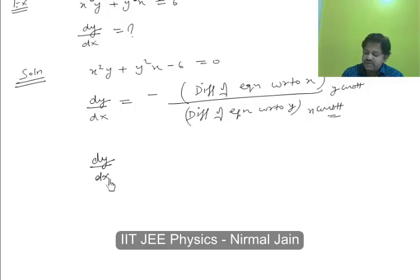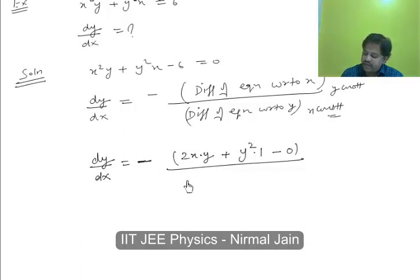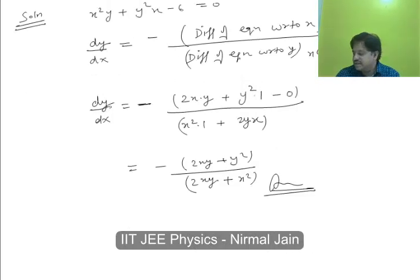Differentiation of x squared y with respect to x: 2xy — y is constant. Plus y squared x differentiated to 1, minus differentiation of 6 is 0. Now differentiation with respect to y: x squared is constant, differentiation of y squared is 2y, x is constant. So the final answer is dy/dx equals 2xy plus y squared, upon x squared plus 2xy.